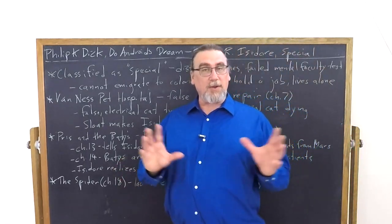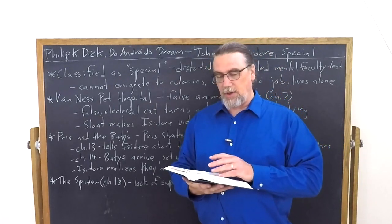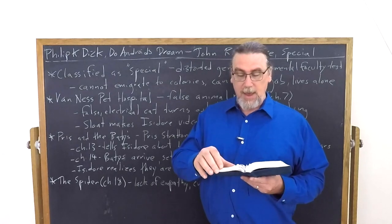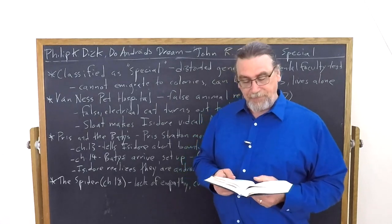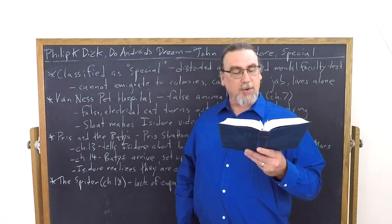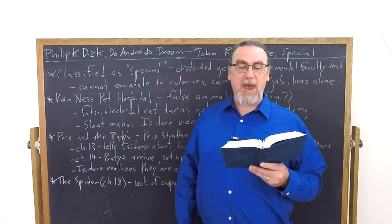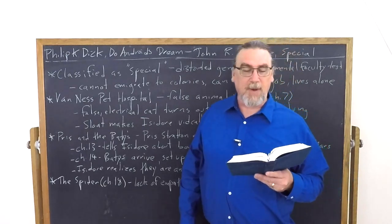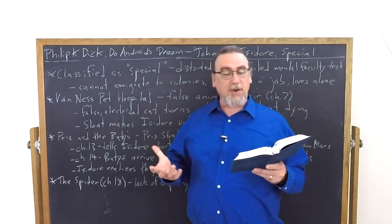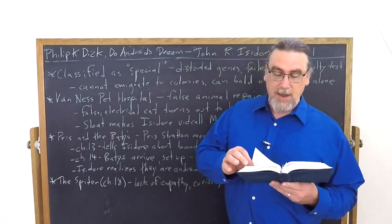Let's jump into talking about the androids now. The first one that he meets is Pris Stratton. This is happening back earlier in chapter six. He hears a TV set in his apartment building and he said, wow, somebody else is here. So he goes to visit. What we see is a fragmented and misaligned shrinking figure, a girl who cringed and slunk away and yet held onto the door as if for physical support. Fear had made her seem ill. It distorted her body lines, made it appear as if someone had broken her and then with malice patched her together badly. Her eyes enormous, glazed over fixedly as she attempted to smile.